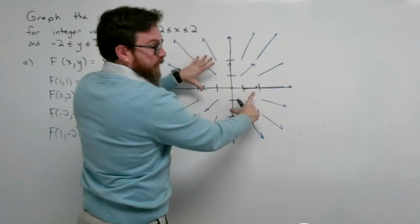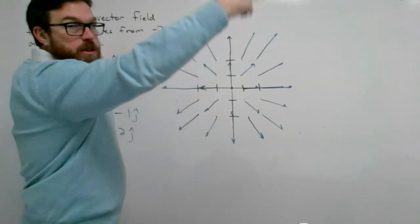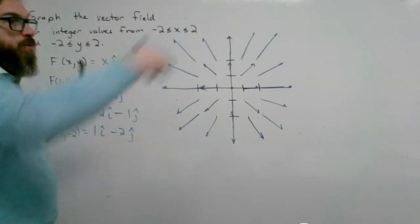Close to the origin, the vectors are a little shorter, and the farther away you get, the bigger they become — this field is increasing as you move away. It might actually define something like the expansion of the universe; things move faster as they go farther away, which is interesting in physics.